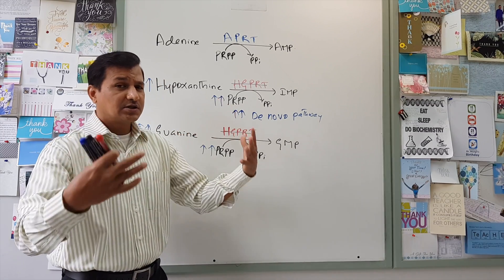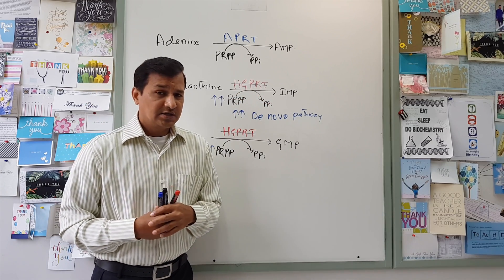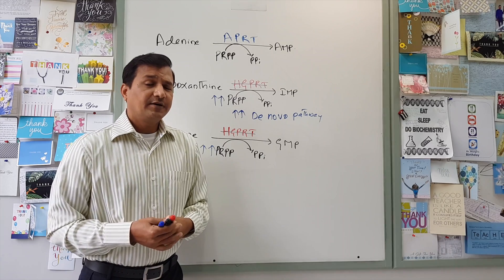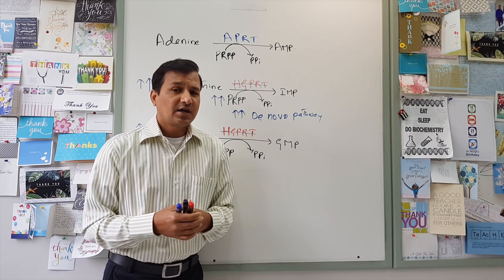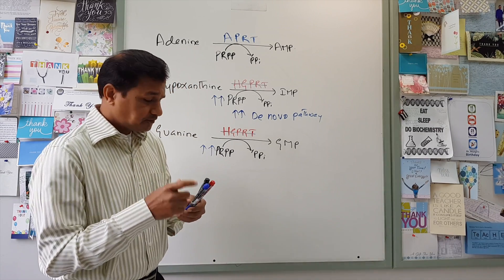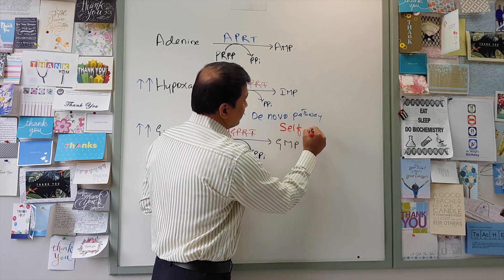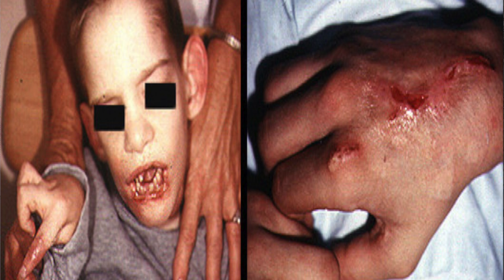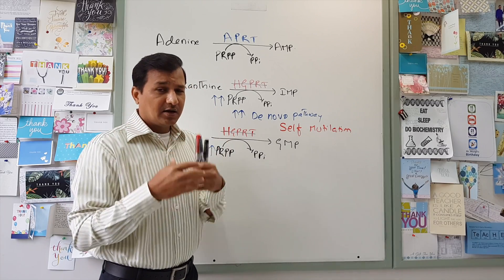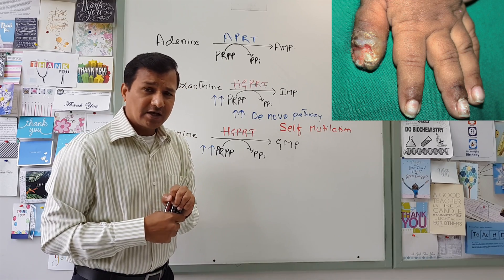So it means the cell is busy making purines from the de novo pathway rather than using salvage pathway to save energy and time. So it means the cell is spending more time, more energy, and that specifically affects neuronal cells. So because there is high levels of de novo pathway here, the neuronal metabolism is altered here, and that can give rise to a bizarre sign that is seen in Lesch-Nyhan syndrome, and that is self-mutilation. So the patient will have self-mutilating behavior. So it means the patient will try to harm their own body parts like it can be fingers, it can be hand, it can be lips. So self-mutilation is one of the bizarre signs seen in Lesch-Nyhan syndrome.